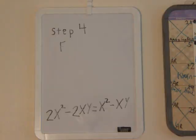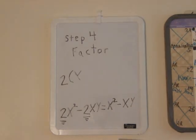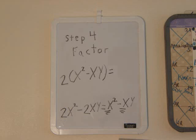Step 4 is to factor. The left side of our equation has a 2 in each term, so we can factor that out. The right side, they just have a 1 in common, so we're just going to leave it inside a set of parentheses.